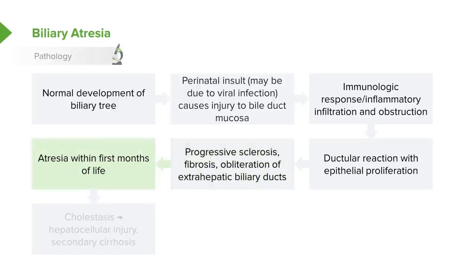This epithelial proliferation results in a progressive sclerosis and fibrosis of the duct, which obliterates these ducts. This usually happens within the first month of life and leads to cholestasis — essentially an inability to get bile through those ducts — leading to a backup which results in hepatocellular injury and a secondary cirrhosis.